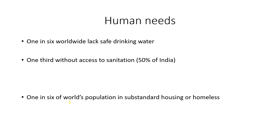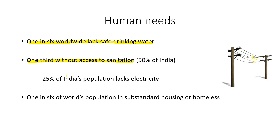Looking at the needs of humans throughout the world: one in six worldwide lack safe drinking water; about one-third are without access to sanitation; 25% of India's population lacks electricity; and one in six of the world's population is in substandard housing or homeless.